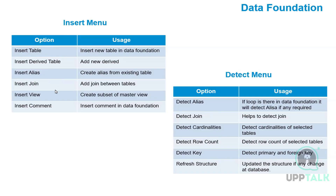These are the options available in the data foundation for inserting and for detecting. The tool automatically provides features to detect — if you are not sure which join is suitable, we can select options like detect join, detect cardinality, and detect row count, so it will automatically detect which join is suitable for the tables. However, it is always recommended to provide joins ourselves.